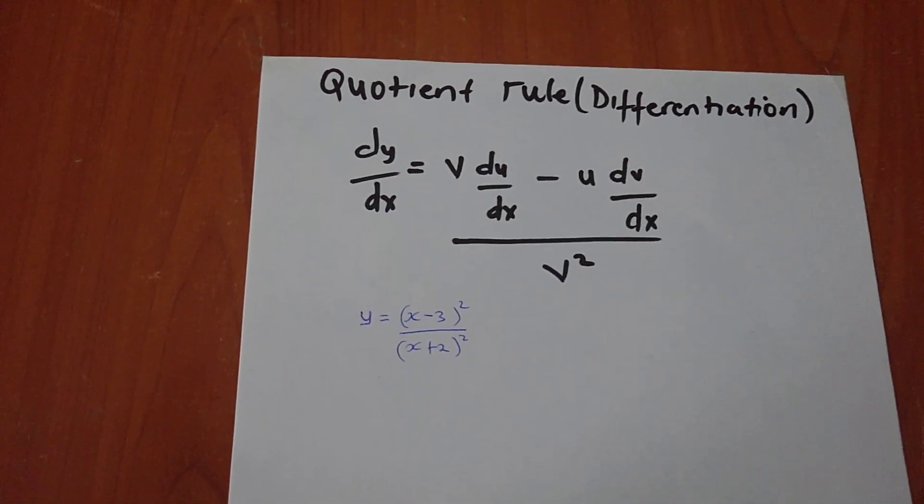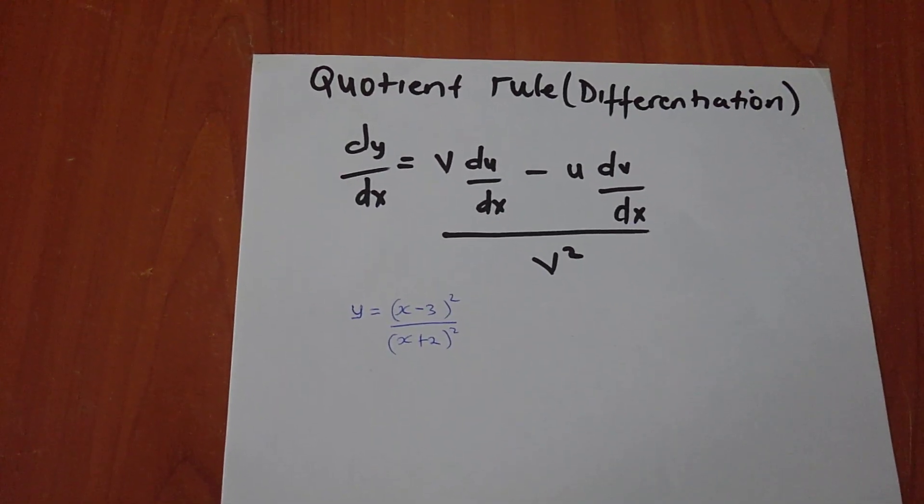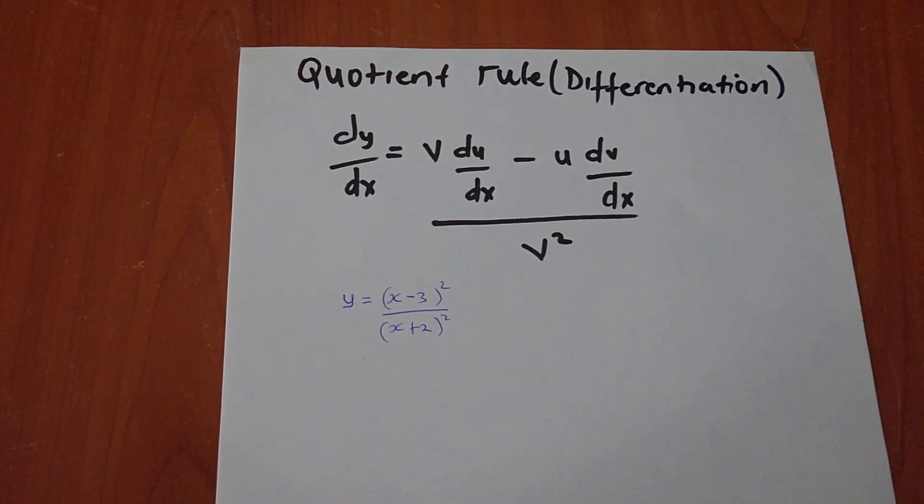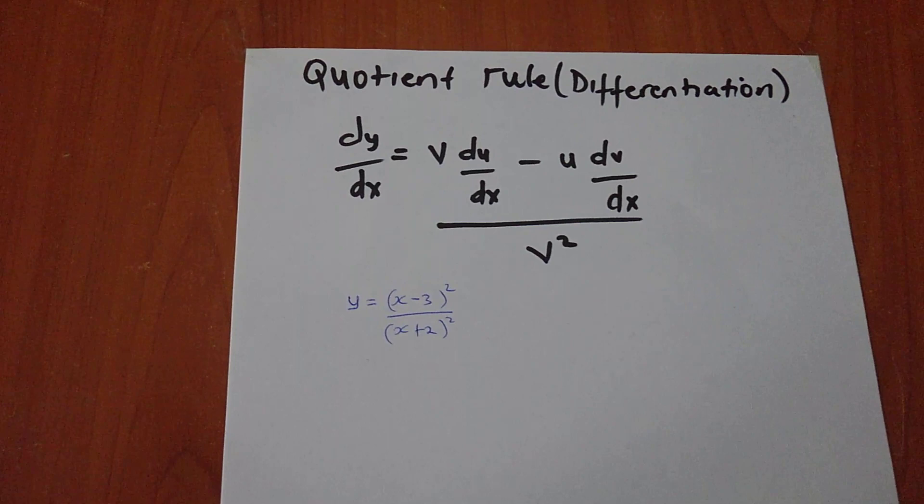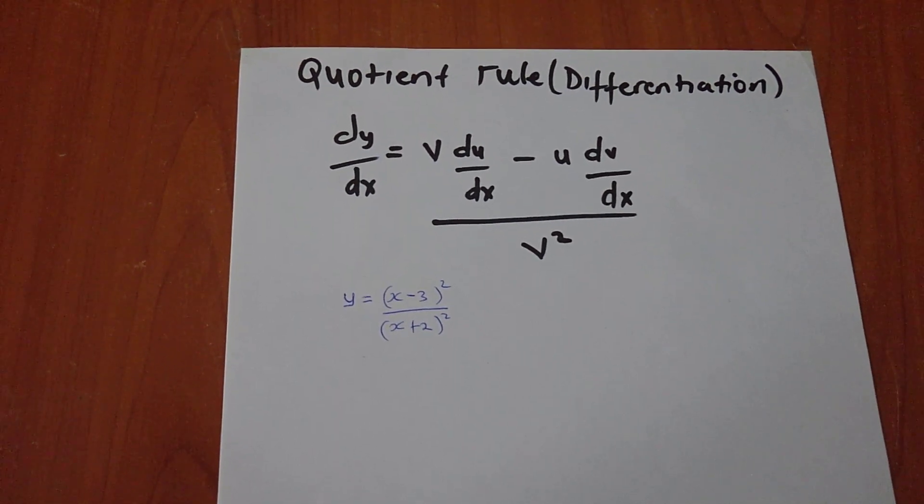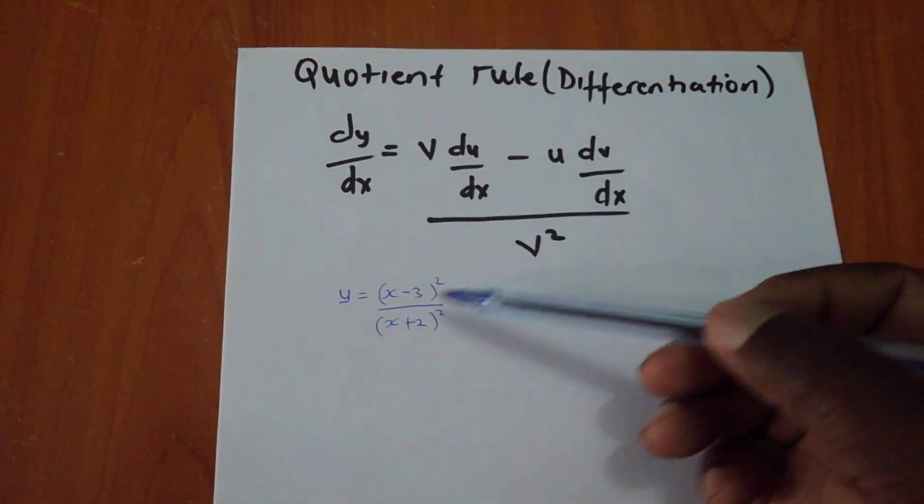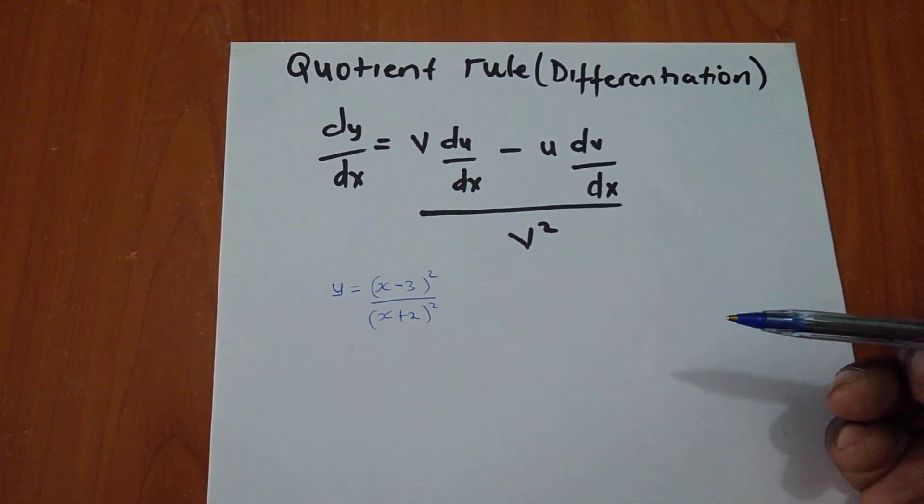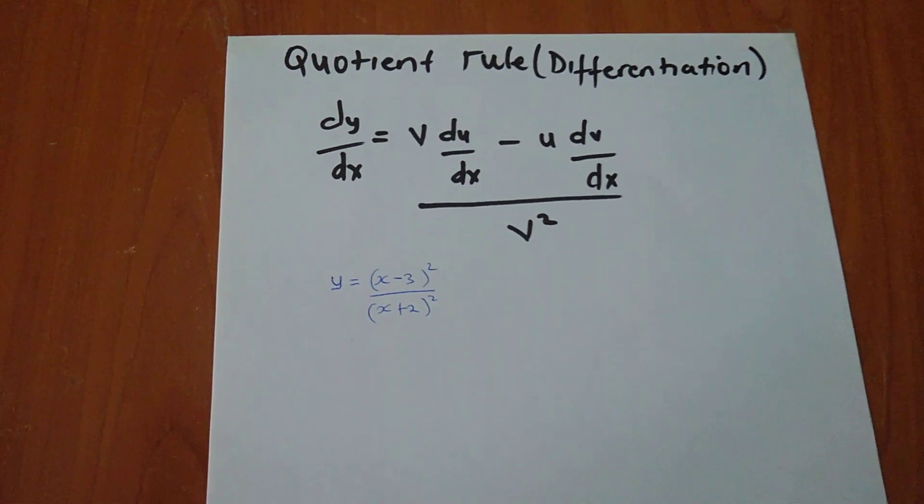Hello members, once again we have this problem, but this time we are going to differentiate using quotient rule. How do you determine that you have to use quotient rule? Of course, you have to have an expression divided by another expression. I don't want to waste more time.